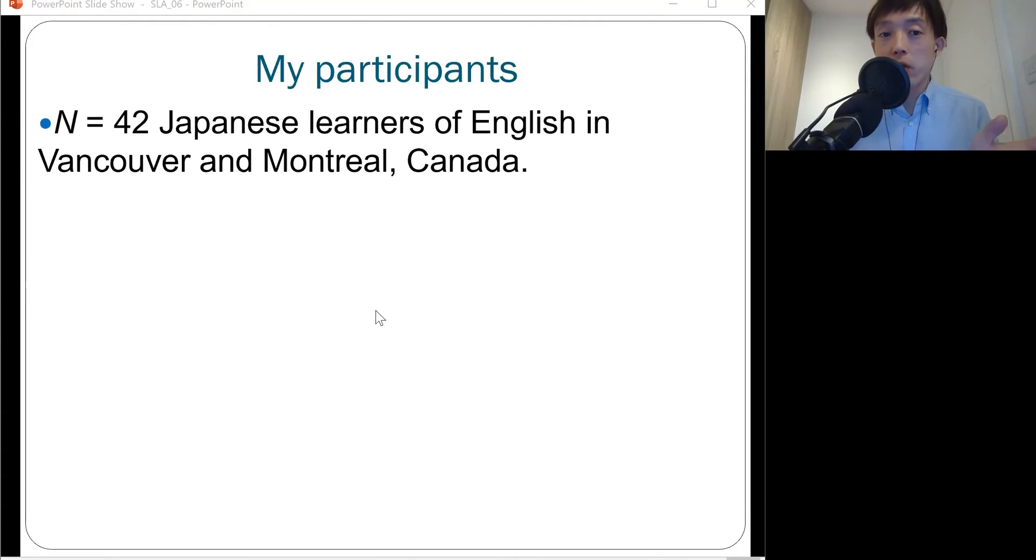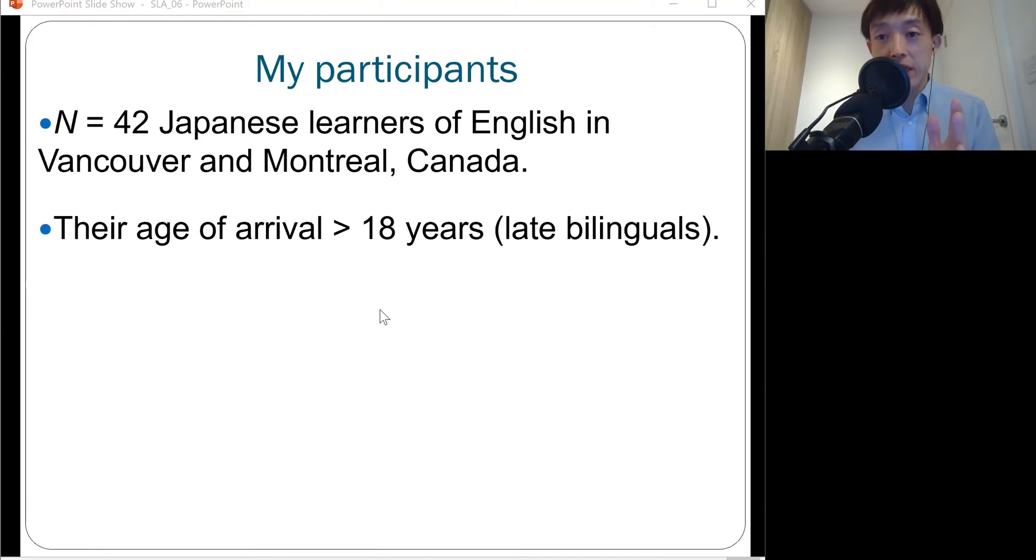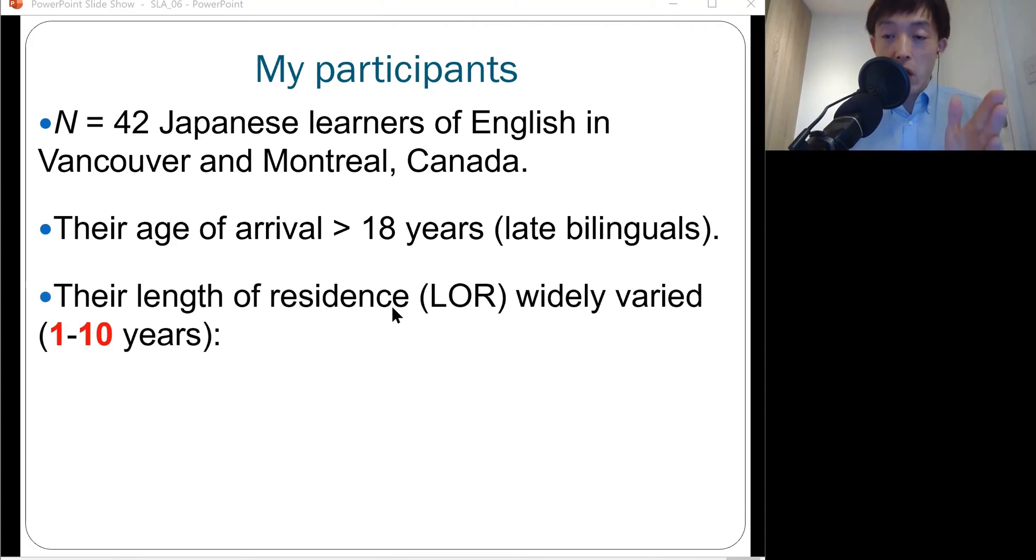In this project, we recruited 42 Japanese learners of English in Vancouver and Montreal, Canada. These participants were carefully selected based on the fact that they had arrived in Canada after the age of 18, meaning they were all late bilinguals speaking English with some form of Japanese accent. Their length of residence in Canada was widely different, ranging from less than one month all the way to more than 10 years.